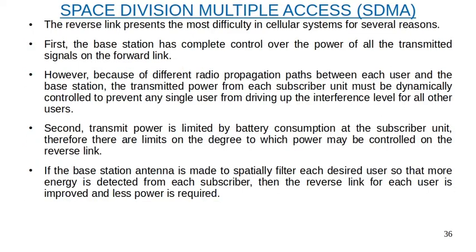The reverse link presents the most difficult challenge in cellular systems for several reasons. First, the base station has complete control over the power of all transmitted signals on the forward link. However, because of different radio propagation paths between each user and the base station, the transmitted power from each subscriber unit must be dynamically controlled to prevent any single user from driving up the interference level for all other users.